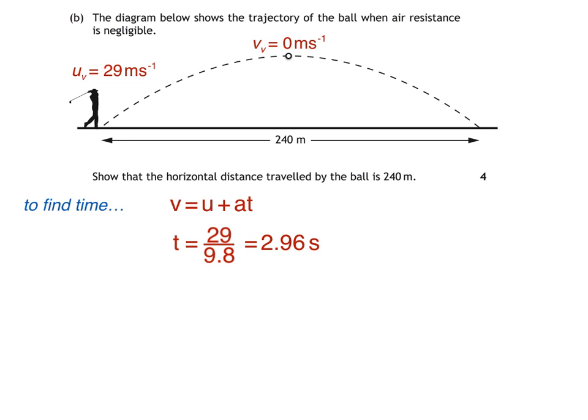Remember this is the time to maximum height. So the total time of flight is 2.96 multiplied by 2 is equal to 5.92 seconds.